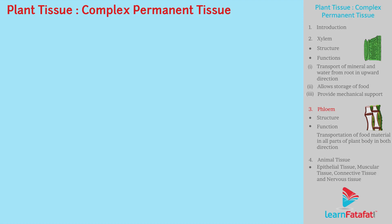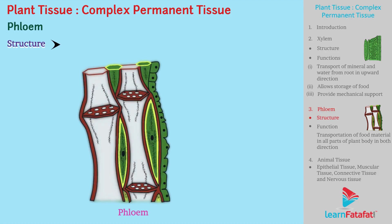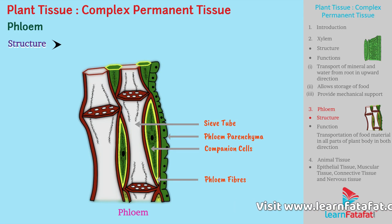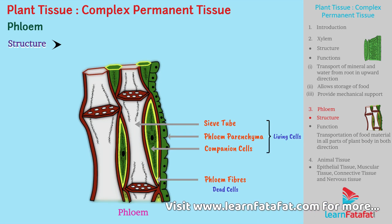Phloem is made up of sieve tubes, companion cells, phloem parenchyma, and phloem fibers. Phloem fibers are the only dead cells in phloem.